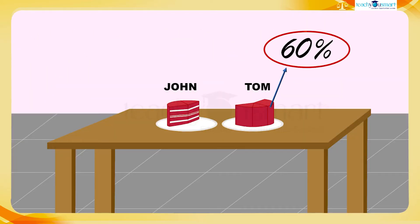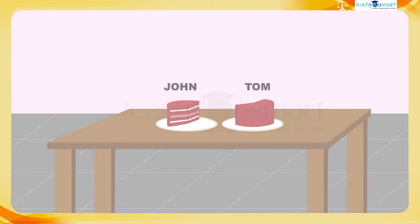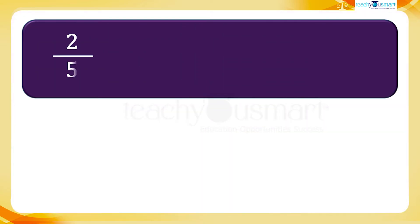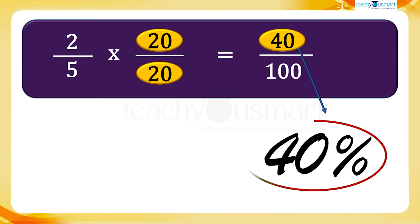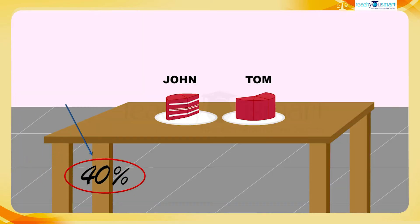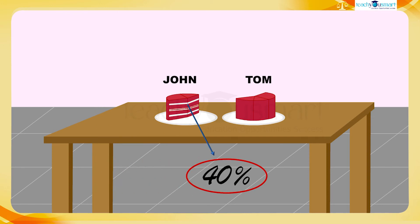Same way, John took two pieces out of five. Two by five multiplied by 20 over 20 equals 40 over 100, equals 40 percent. John has 40 percent of the cake. There is also another method for finding the percentage, that is the unitary method.